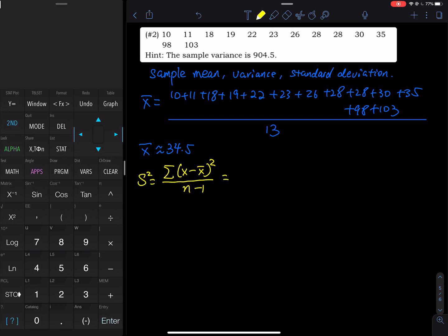So that is equal to (10 - 34.5)² divided by 13 minus 1, and then (11 - 34.5)² divided by 13 minus 1.